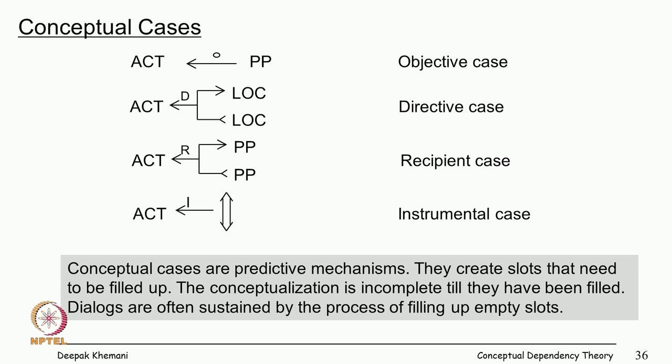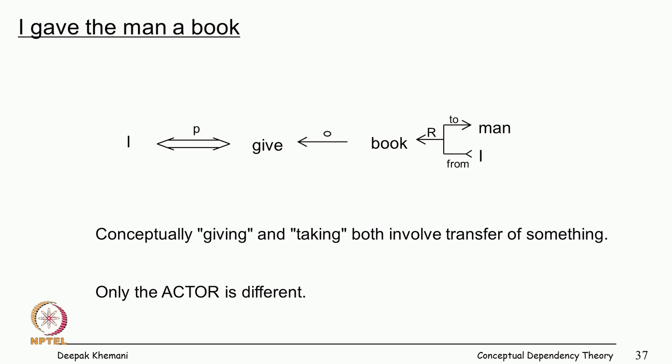The conceptual cases we talk about are the objective of the sentence, a directive case for direction, a recipient case for what was being transferred, and an instrumental case for the instrumental action. Conceptual cases are predictive mechanisms — they create slots that need to be filled up, and the conceptualization is incomplete until all slots are filled. The whole story understanding process is motivated by trying to fill those slots.